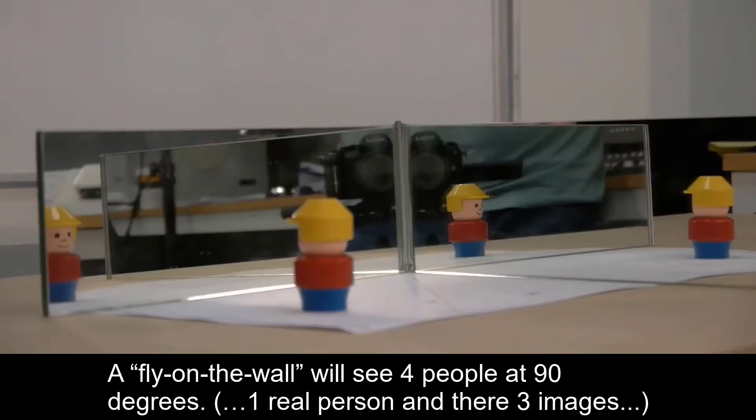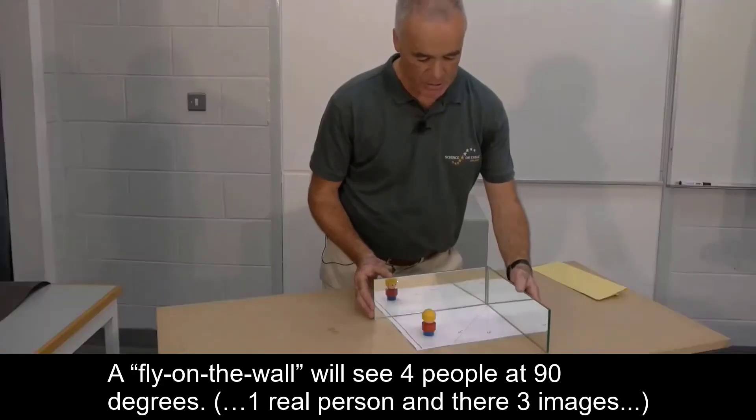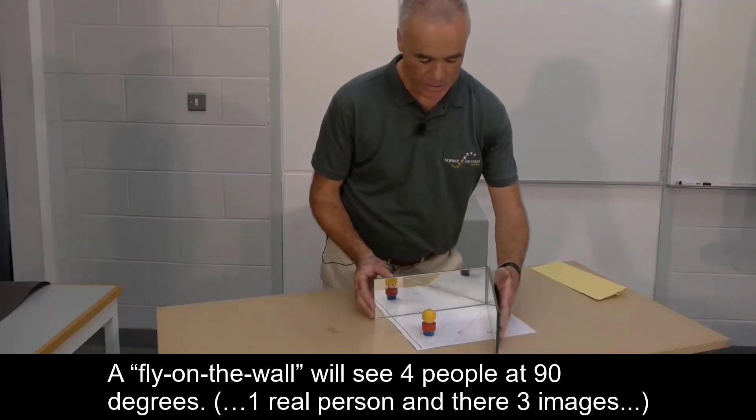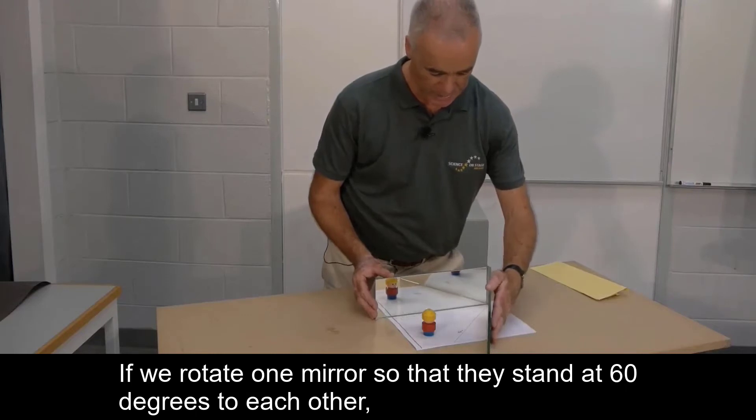A fly on the wall will see four people at 90 degrees, one real person and three images. If we rotate one mirror so that they stand at 60 degrees to one another, the person will observe five images of themselves.